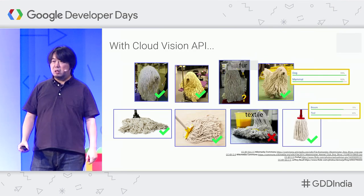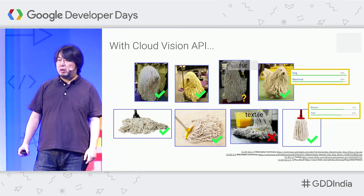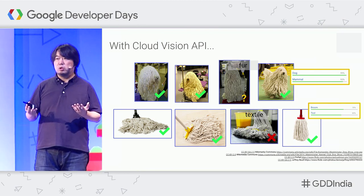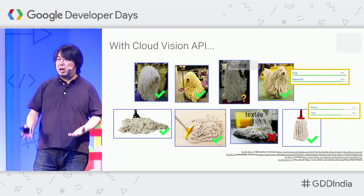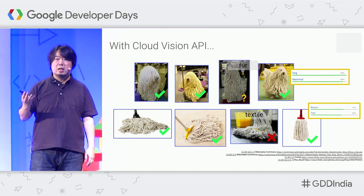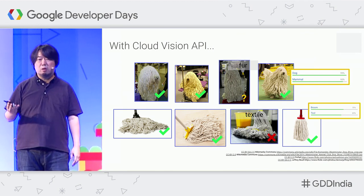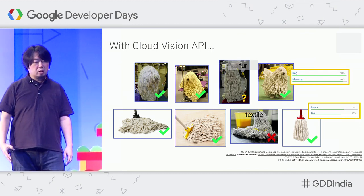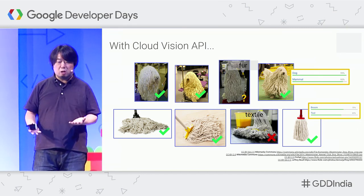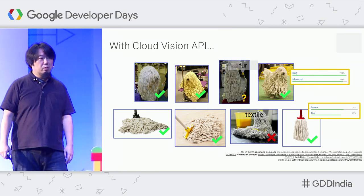By using the Cloud Vision API, you can get fairly high accuracy on classifying these images. In any machine learning algorithm, it's almost impossible to get 100% accuracy — the accuracy would typically be something like 70, 80, 90, 95, or 98%, but not 100% in most cases. Still, the Cloud Vision API does a great, decent job on classifying these images as a dog or a mop.